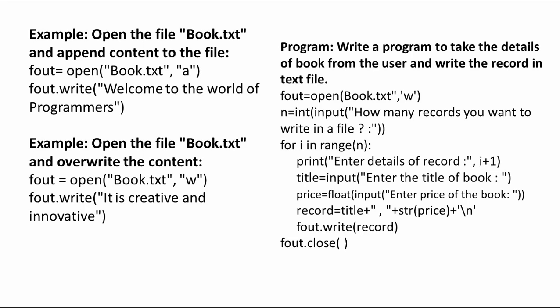In the second example, the mode is 'w': f_out = open('book.txt', 'w'). Here we have written f_out.write('It is creative and innovative'). This line will simply override the previous data of the file book.txt, so this data will be written and the previous data will be erased.